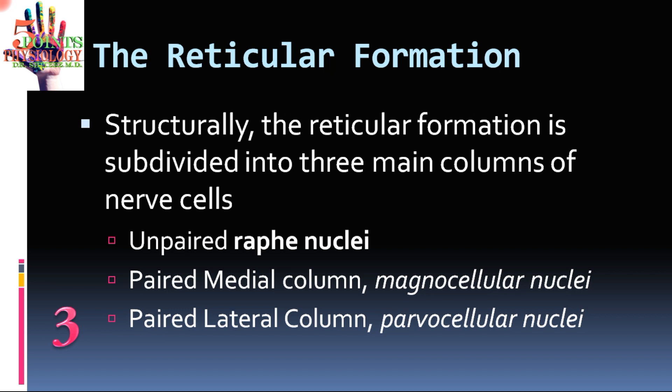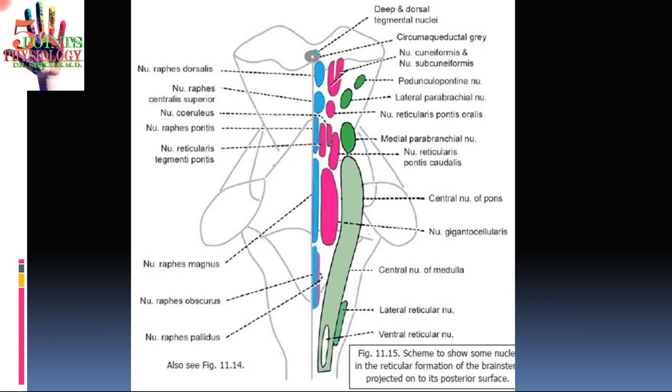The second paired column is the medial column, situated just beside the unpaired raphe nucleus. It is made up of magnocellular (large) cells and is therefore called the magnocellular nuclei. The third is the paired lateral column, present laterally to the medial column — the parvocellular nuclei, named because it is made up of smaller-sized neurons.